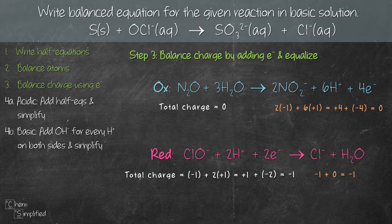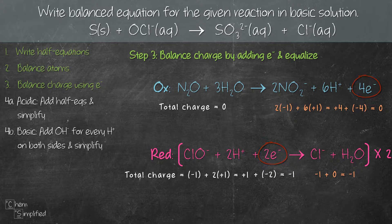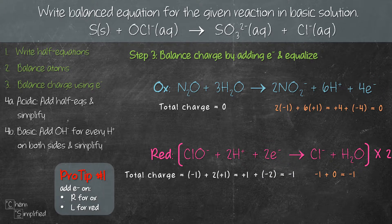Now that we've balanced the charge on both sides, we need to equalize the number of electrons in both equations. For oxidation we have 4 electrons whereas for reduction we have 2 electrons, so we multiply the entire reduction equation by 2 to get 4 electrons in both. Here's a tip: when adding electrons for oxidation, make sure they're added on the right hand side, and for reduction on the left hand side. If electrons appear on the wrong side, something went wrong — go back and check your work.